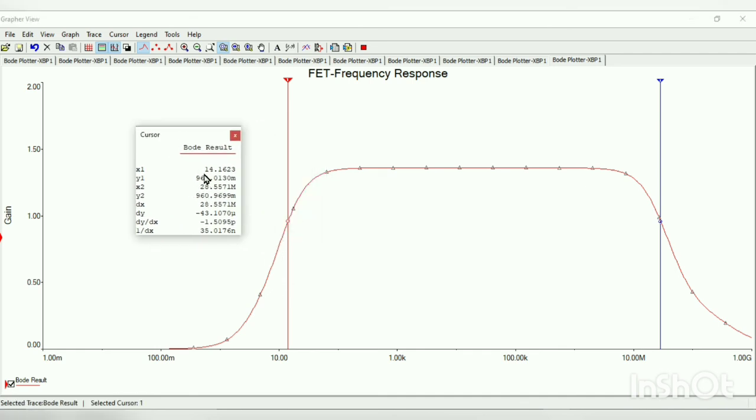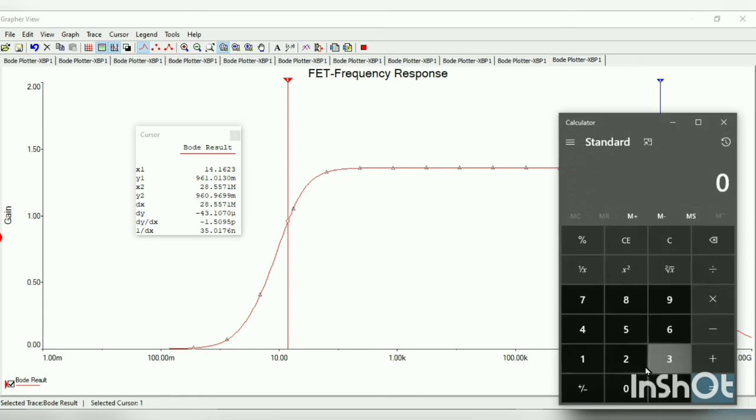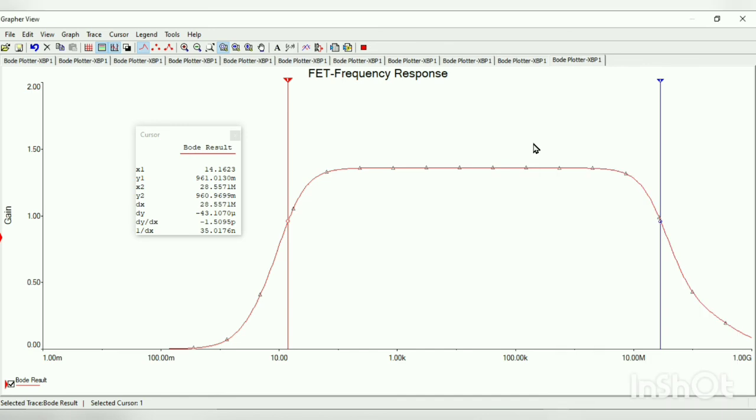Now when you see, we find that our low frequency is 14.1623 Hz and our high frequency is 28.5571 MHz. We know bandwidth equals high frequency minus low frequency. That is 28.5571 minus - when converting 14.16 Hz to MHz, we get 0.00001416, which gives us a value of 28.55 MHz. This is our bandwidth. Thank you.